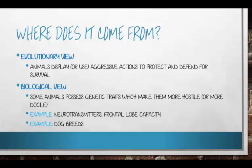Dog breeds are a pretty easy-to-understand example of how biology can lend to aggression. For decades, even centuries, we've been breeding dogs — taking the most docile characteristics of wolves, breeding those to create a less aggressive species, then breeding the most docile of each litter. Throughout generations we've created a wholly different species that is far more malleable and docile than their evolutionary roots. However, some breeds remain more naturally aggressive than others, which also speaks to selective breeding.